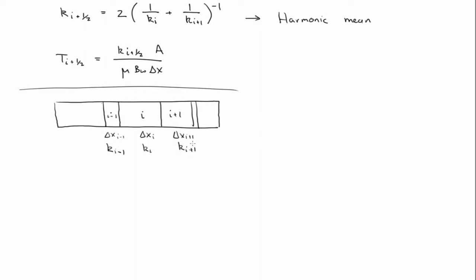Well, you can work through all the details like we just did. I'm not going to do that. But there you'd get the transmissibility at the half grid block is equal to k i plus 1 half times a mu b w x i plus 1 half.